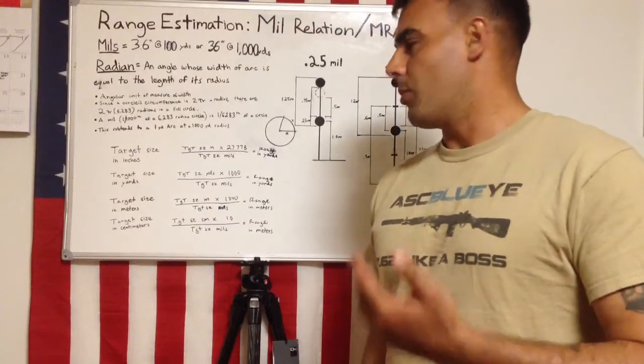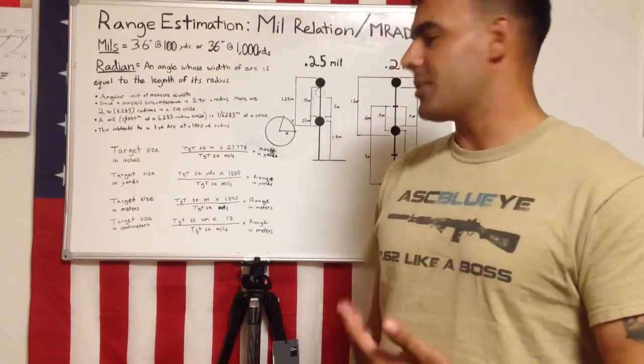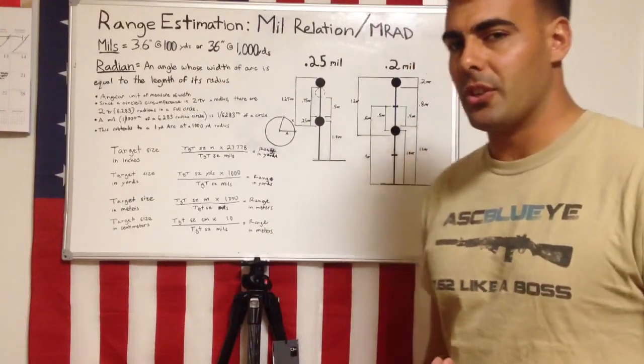A mill is 1,000th of a radian, so there are 6,283 mills in a full circle.